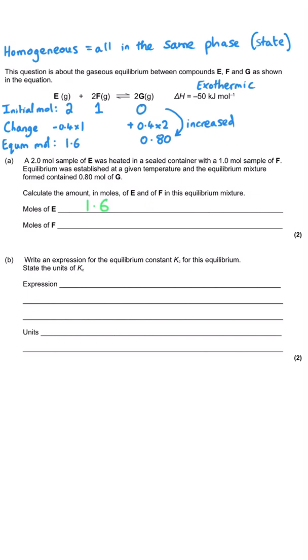And F, which began at 1 mole, will have decreased by 0.4 twice because the coefficient is 2 for F. So that will have decreased by 0.8, taking us down to 0.2 moles of F at equilibrium. And we need both of those moles, equilibrium moles of E and F, in order to get those first marks.